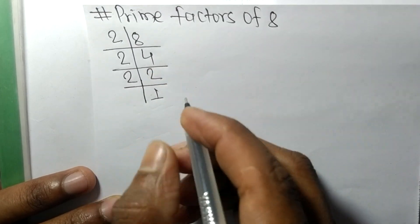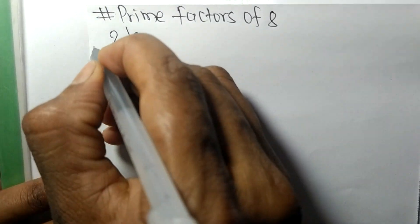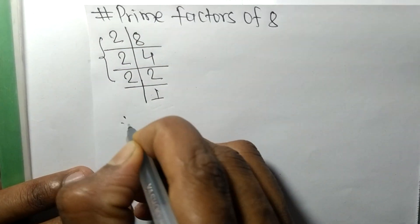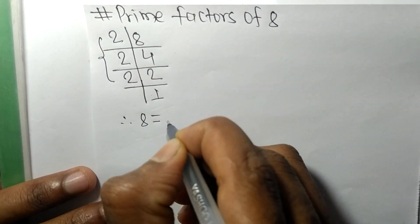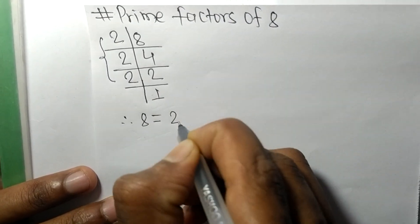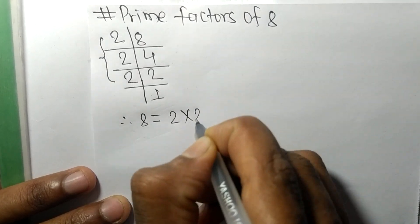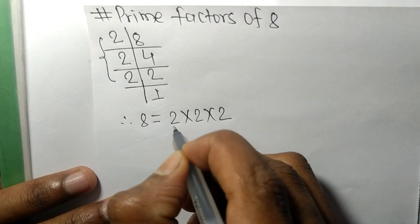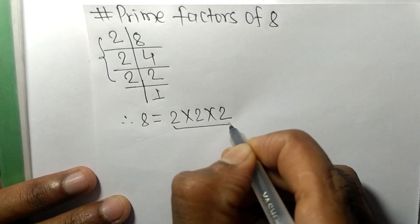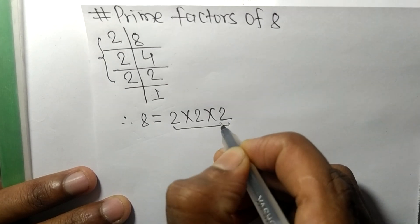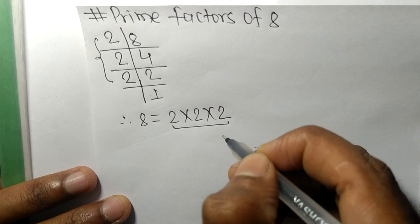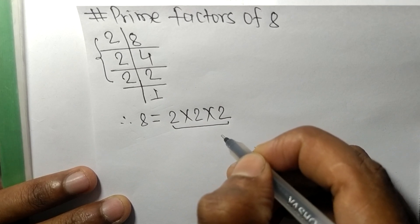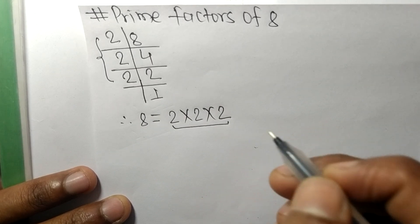On dividing we get 1. So from this we can write 8 is equal to 2 times 2 times 2. These are all the prime factors of 8. That's it for today, thanks for watching.